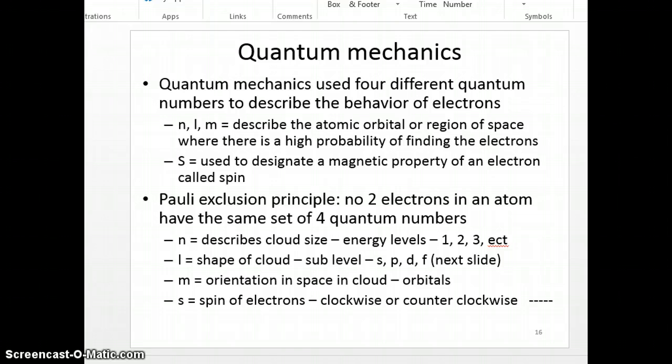L is going to describe its shape. It's known as a sublevel. And there's sublevel S, P, D, and F. And we're going to spend more time talking about that in the next lecture. M is its orientation within the cloud, the orbital it's actually in. We're not going to spend a whole lot of time dealing with M. And S is just its spin. Does it spin clockwise or does it spin counterclockwise?